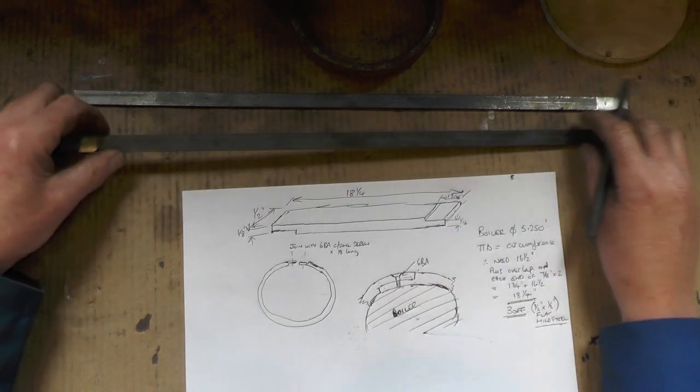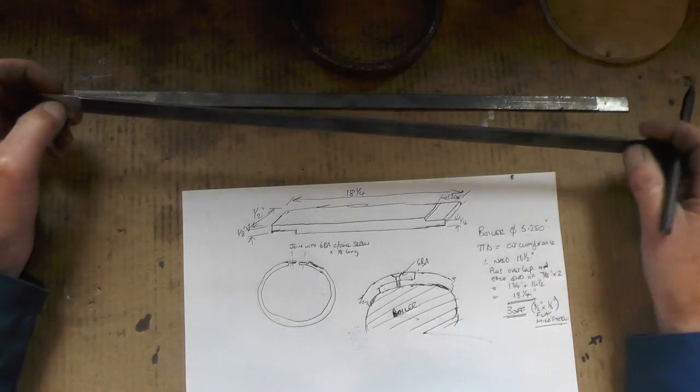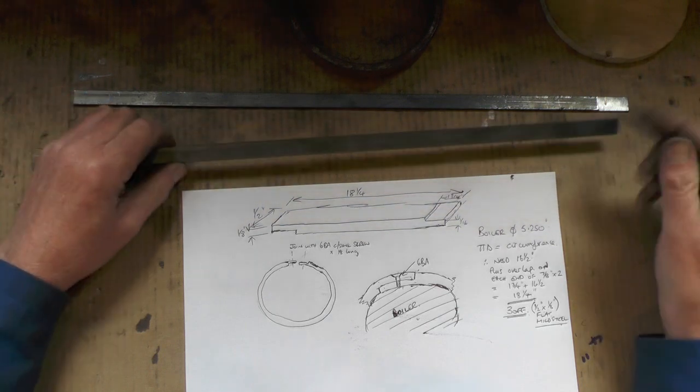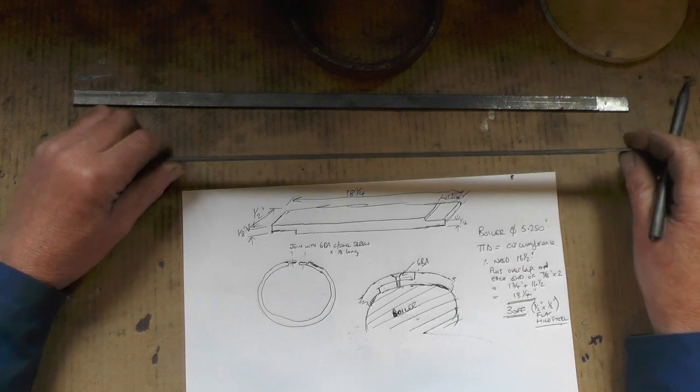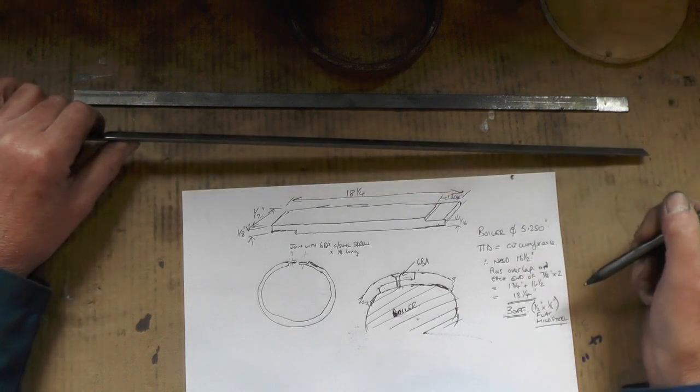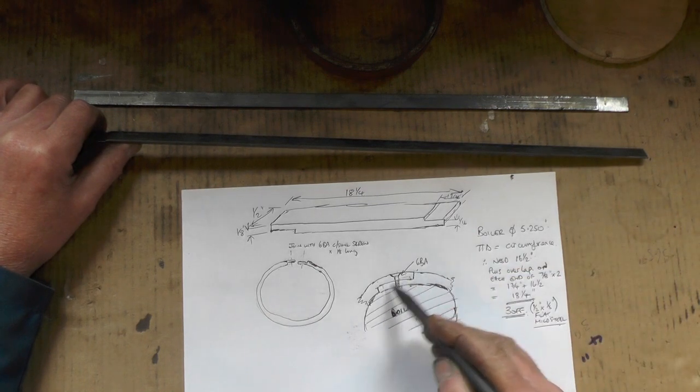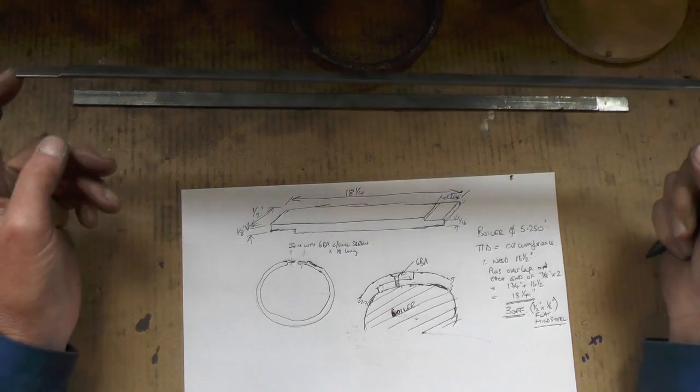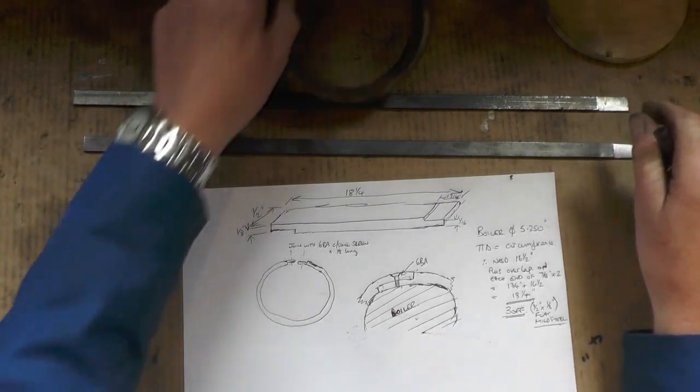So to get your length of material, there's a little mathematical equation you've got to use and that's pi times diameter to give you the circumference. In my case it's 16 and a half, then I've allowed seven eighths on each end for the overlap. So I've cut three pieces off at 18 and a quarter.